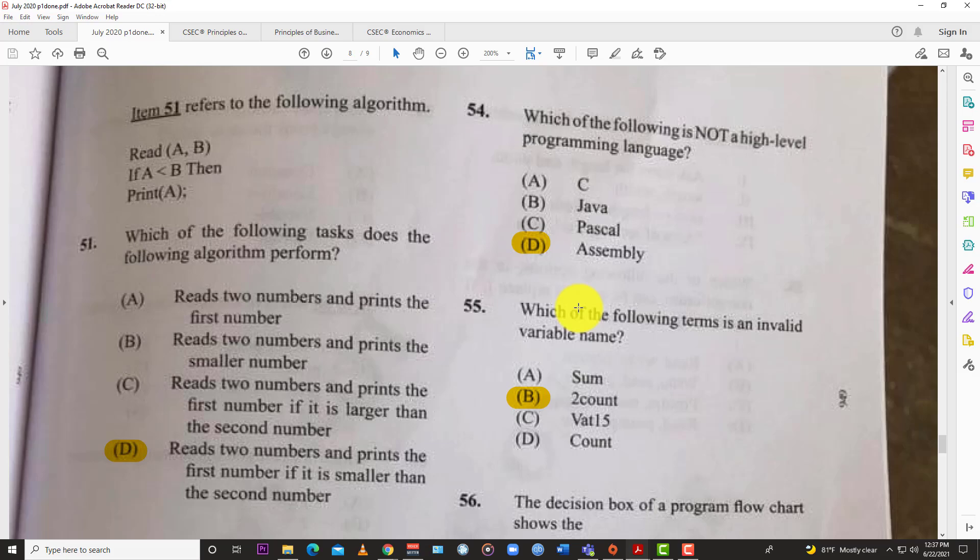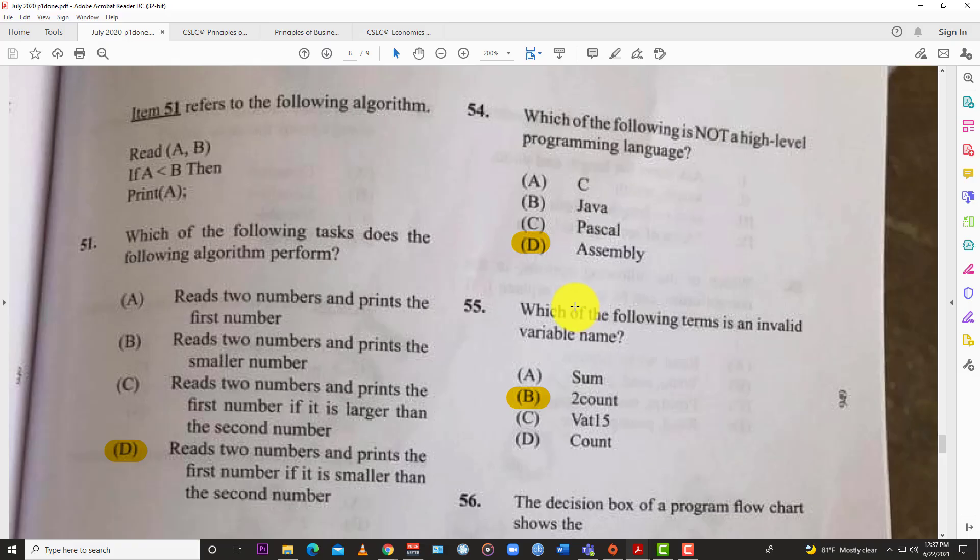Question 55: Which of the following terms is an invalid variable name? You have A, sum. Of course you've seen that. The best answer is B, 2count. You know what count and VAT15 are, but 2count—that ain't gonna work for nothing.